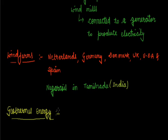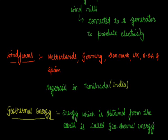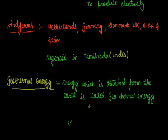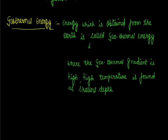The third non-conventional resource is geothermal energy. Heat energy obtained from the earth is called geothermal energy. The temperature in the interior of the earth rises steadily as we go deeper. Sometimes this heat energy may surface in the form of hot springs and can be used to generate power. Where the geothermal gradient is high, high temperatures are found at shallow depth.